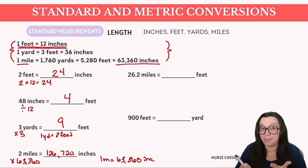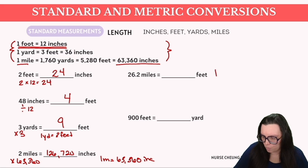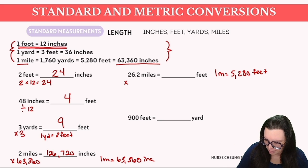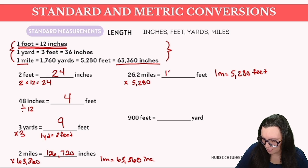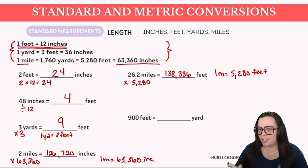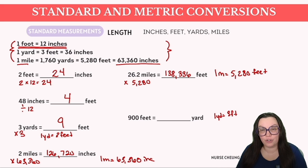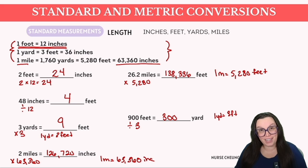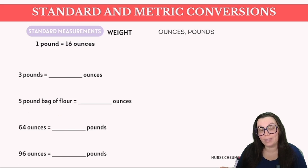For 26.2 miles to feet — you might recognize this as a marathon — one mile is equal to 5,280 feet. We multiply 26.2 by 5,280, giving us 138,336 feet. Lastly, converting 900 feet to yards: one yard equals three feet, so we divide 900 by three, which gives us 300 yards.